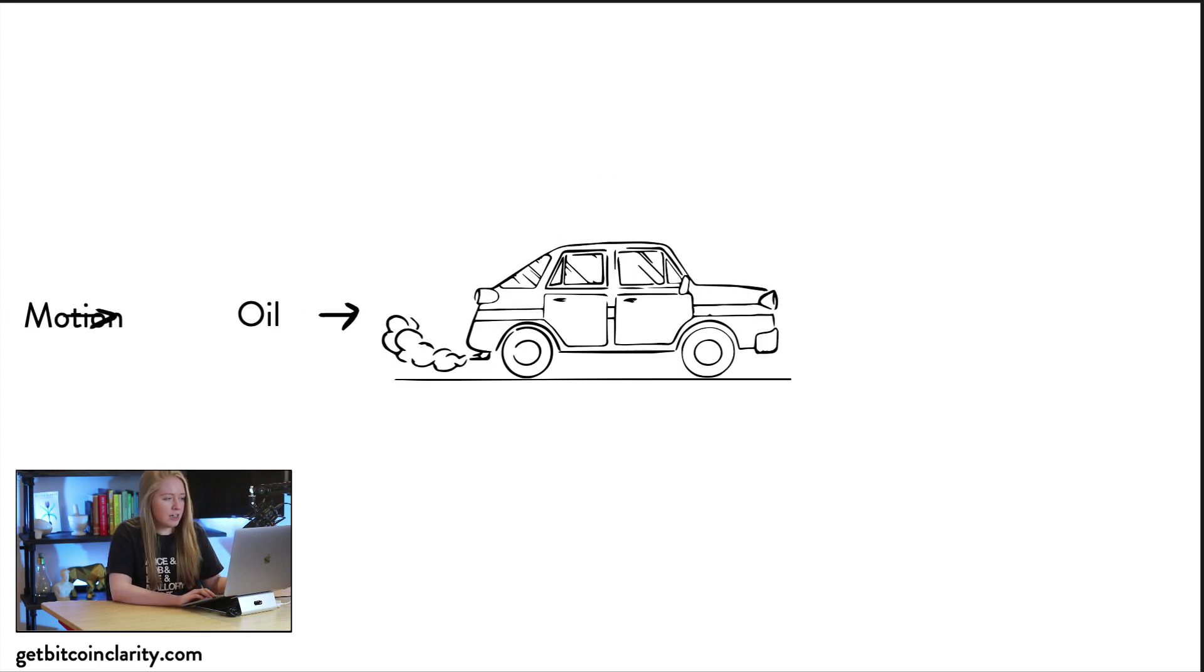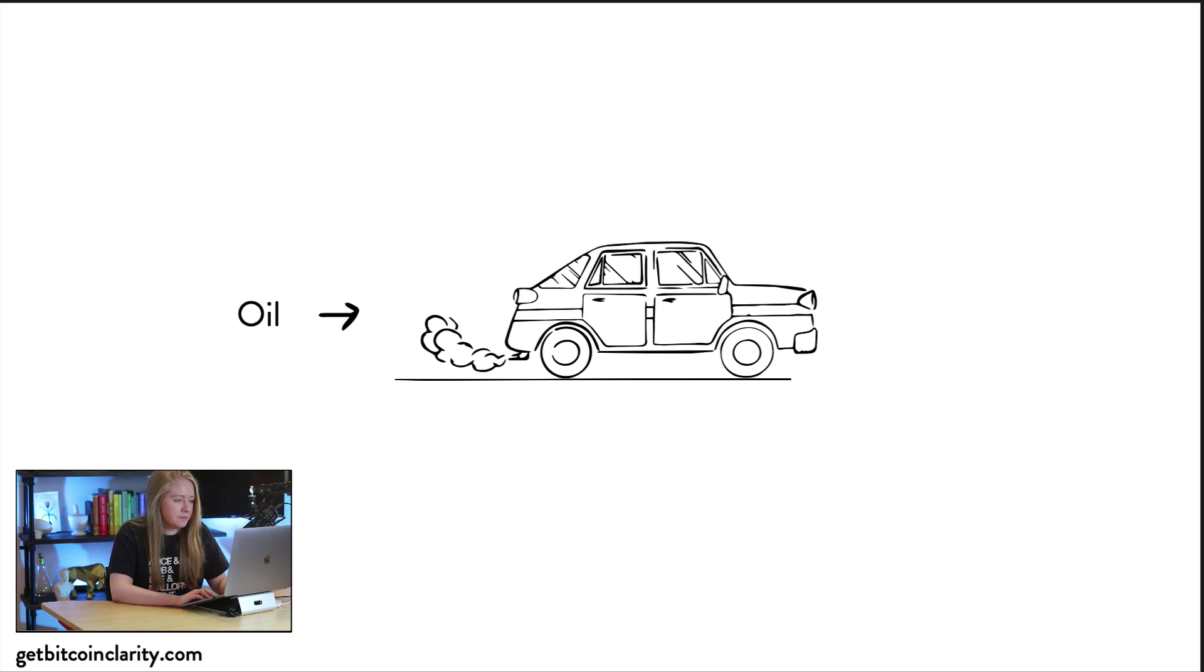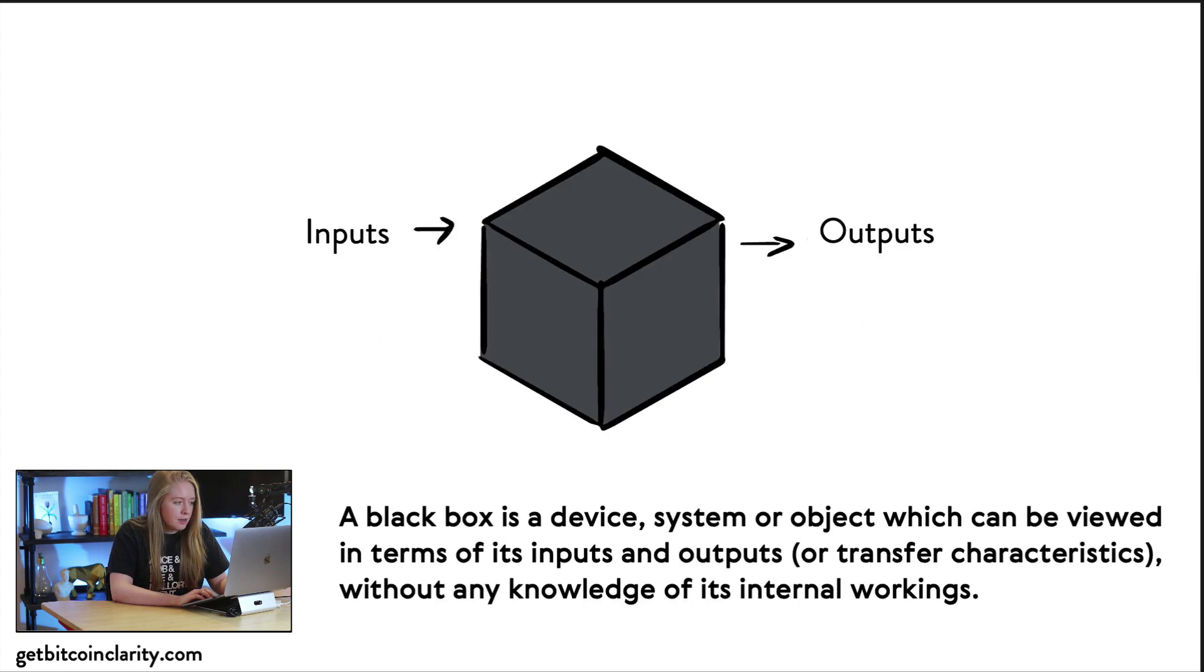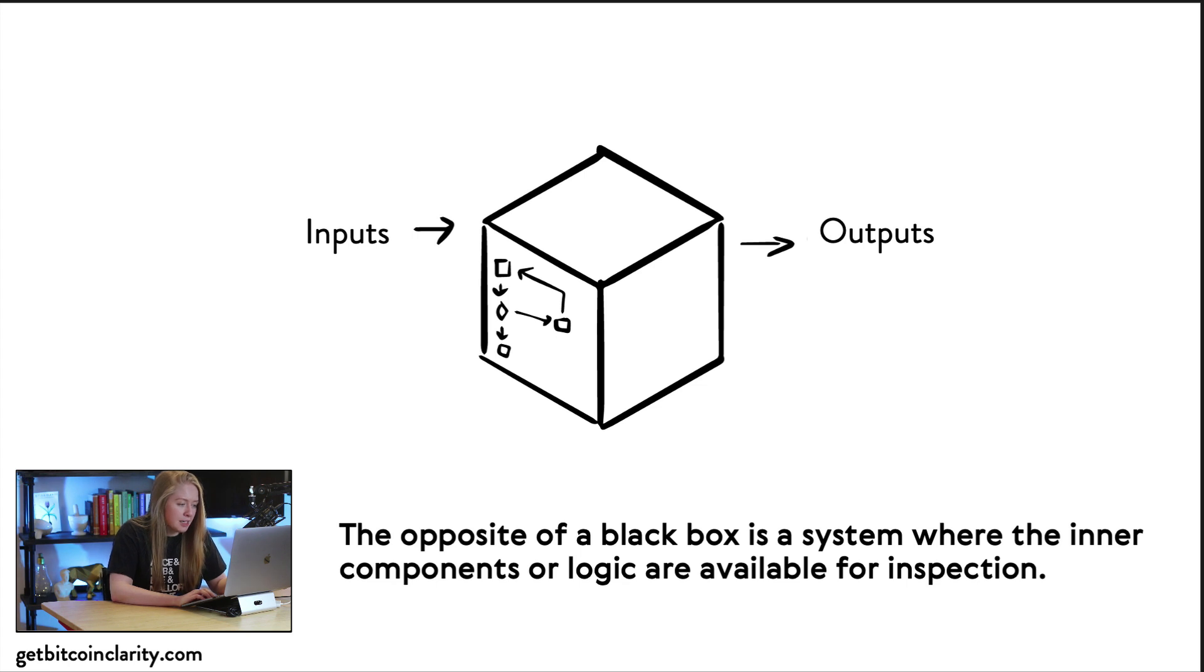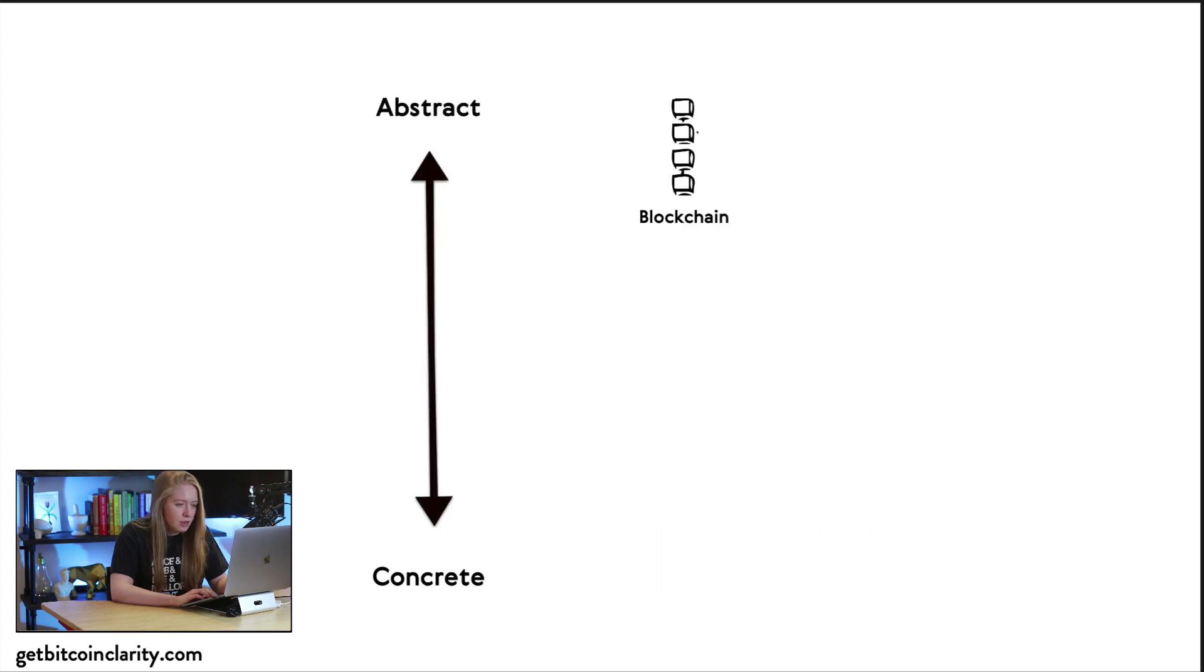A black box is a device, system, or object which can be viewed in terms of inputs and outputs or transfer characteristics without any knowledge of its internal workings. The opposite of a black box is a system where the internal components or logics are available for inspection.